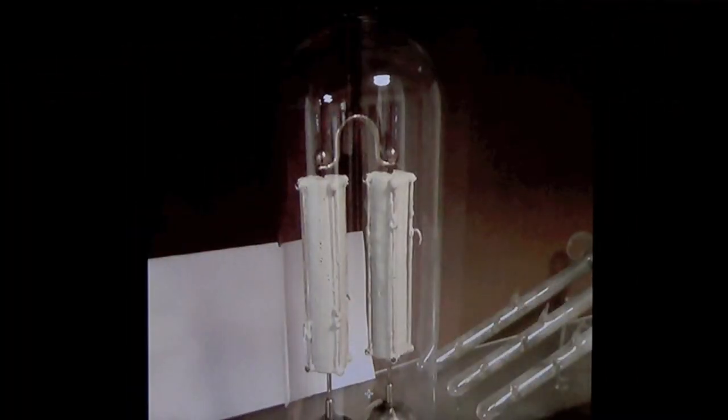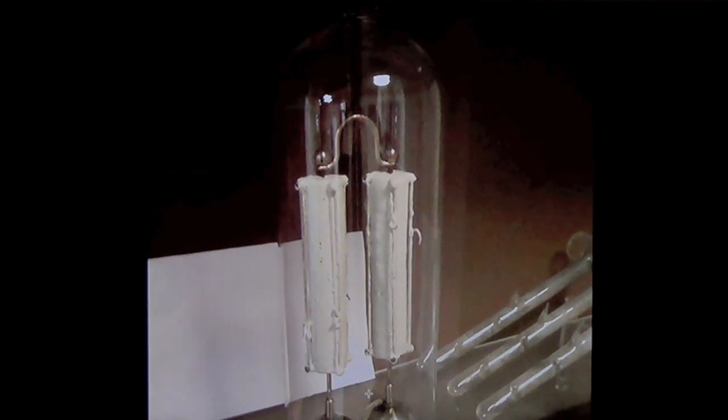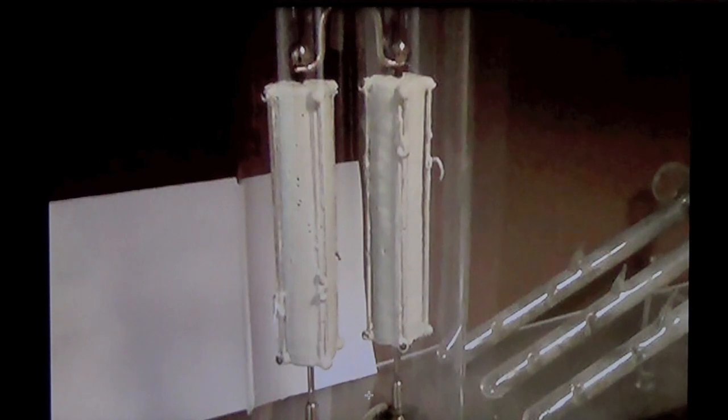These are dry piles here and of the materials at the time they probably used something like silver foil, zinc foil or maybe copper foil and zinc foil and a piece of paper or fabric in between those that was coated with a light paste of maybe manganese dioxide which was some material that was available at that time period. And there's about a thousand of those in each one of these dry pile stacks here.